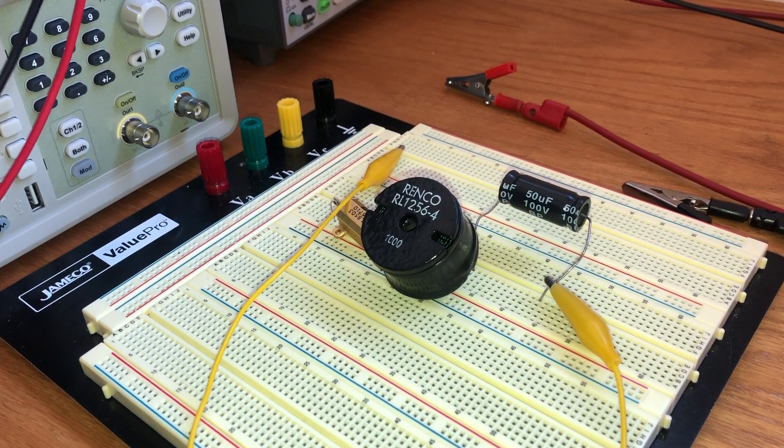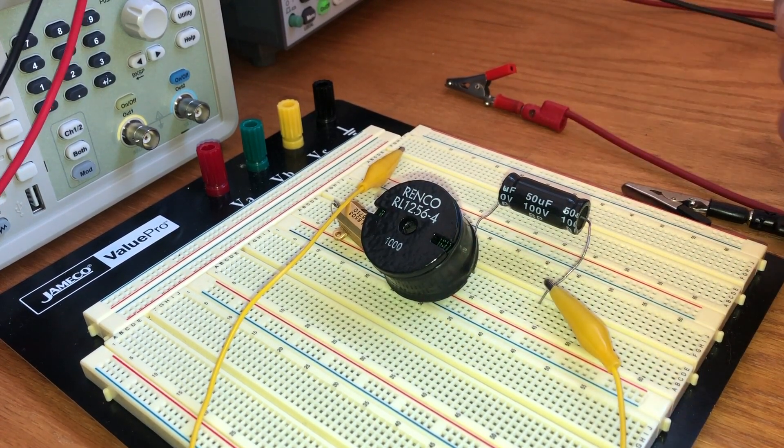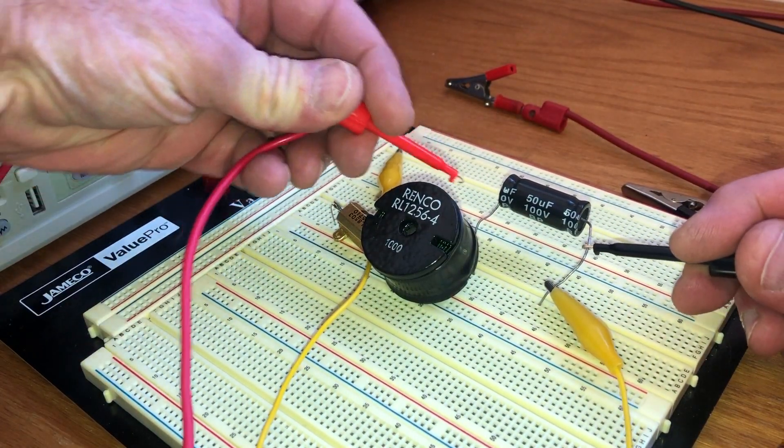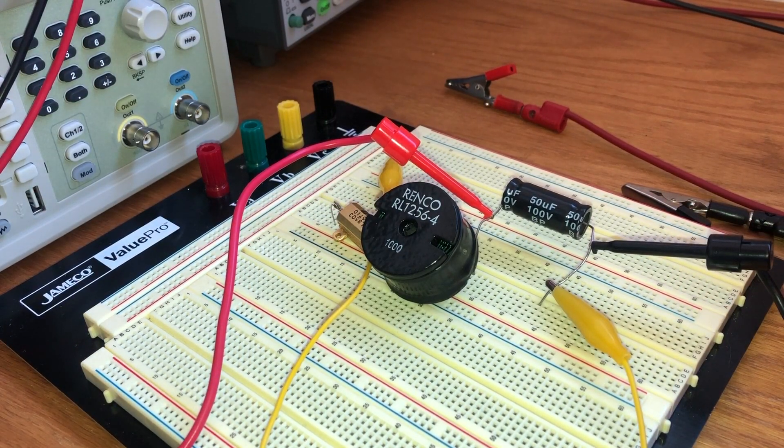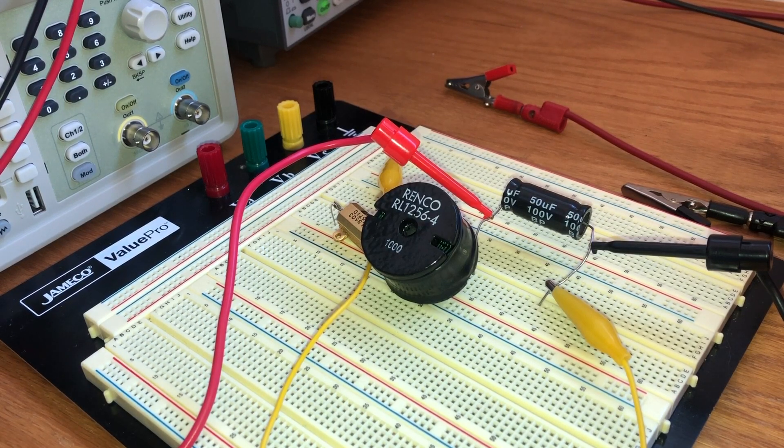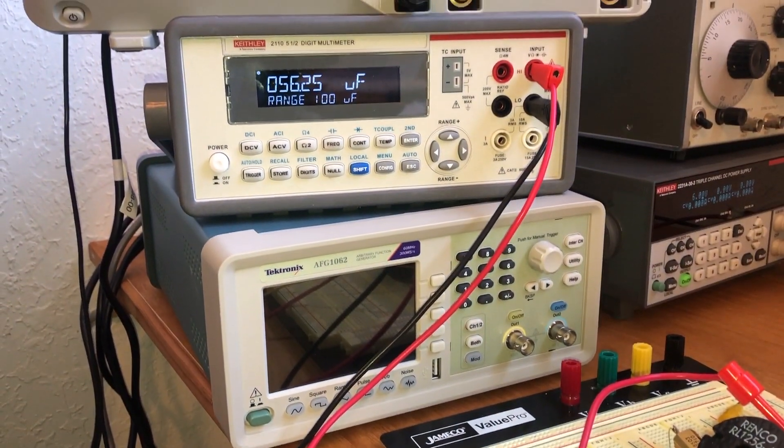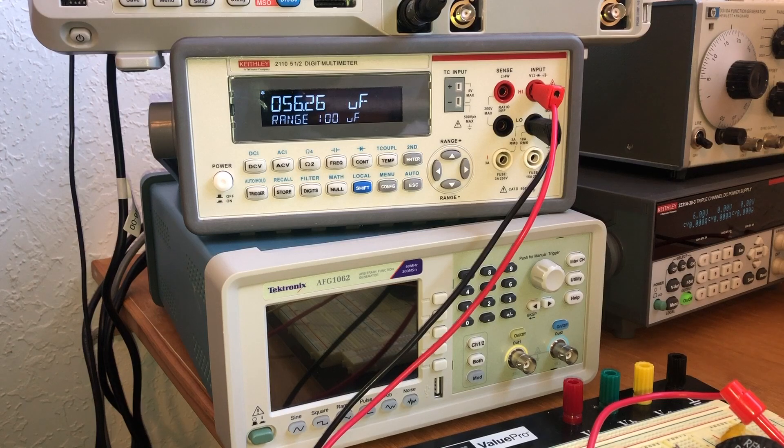Let's measure the values of the individual components. Let's do the capacitor first. It says 50 microfarads, but I'm going to put the leads to the multimeter across that and we'll see what it shows up as. If I look up here on the meter, it shows as 56.26 microfarads, so it's close to what it was labeled.